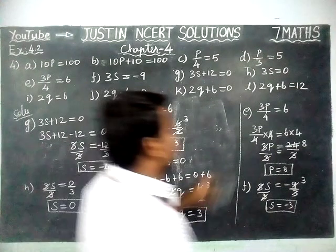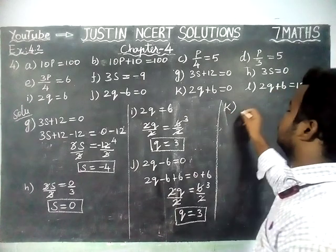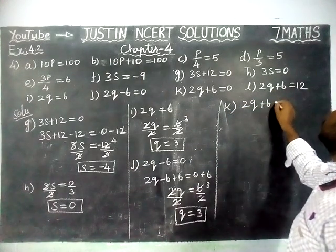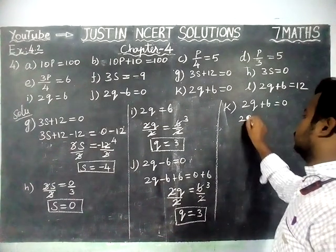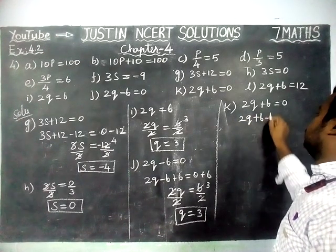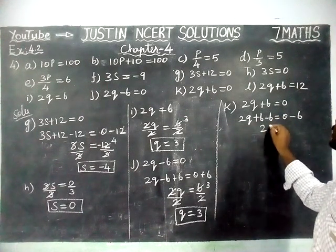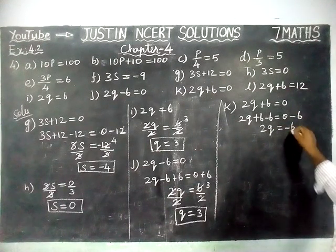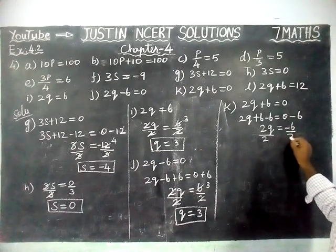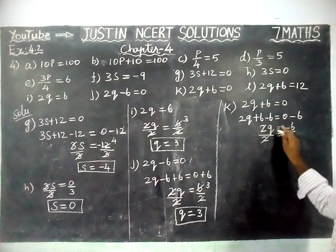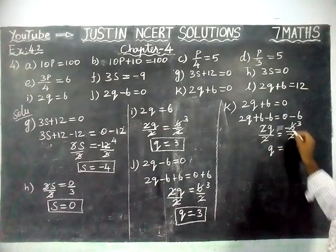We are going to solve option K: 2Q plus 6 is equal to 0. To cancel this plus 6, we are going to subtract 6 on both sides. 2Q plus 6 minus 6 is equal to 0 minus 6. Plus 6 minus 6 gets cancelled. So, 2Q is equal to 0 minus 6 equal to minus 6. Now we are going to divide 2 on both sides. 2 gets cancelled. 1 two is 2, 3 twos are 6. Q is equal to minus 3.